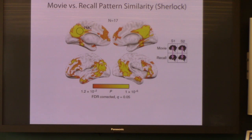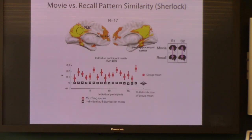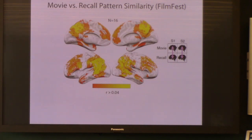What you get is a map of all of the regions where you had similarity between individual movie events and the brain patterns at the time of recalling that event. The regions you see are these long-timescale, high-level regions that are part of the default mode network: angular gyrus, posterior medial cortex, medial PFC, dorsal PFC, perihippocampal cortex. To get a sense of the robustness of this effect, you can see the reinstatement effect in every individual subject in posterior medial cortex. This is the same map in the Film Fest data — irrespective of the fact that many events occurred out of order, you can still compare movie scenes to recall scenes and get essentially the same map.